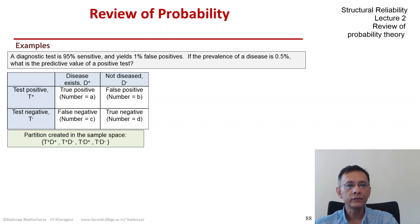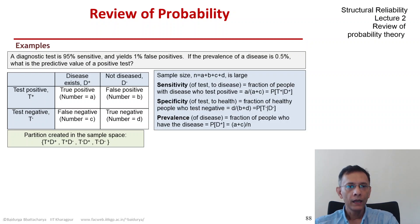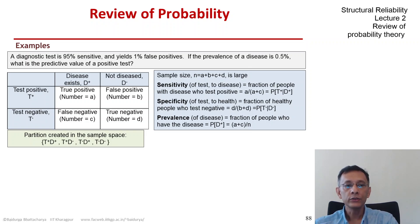This gives us a two-by-two truth table of true positive, false positive, false negative, and true negative. In terms of counts A, B, C, and D, which sum to N, we can define the sensitivity of the test: the fraction of people with disease who test positive. That is A over A-plus-C, which is the conditional probability of T-plus given D-plus.